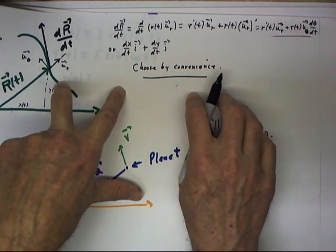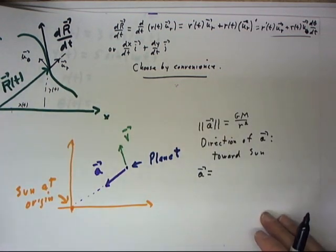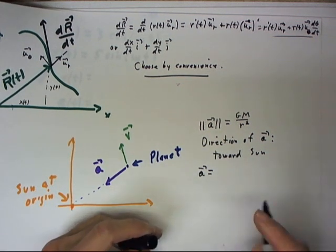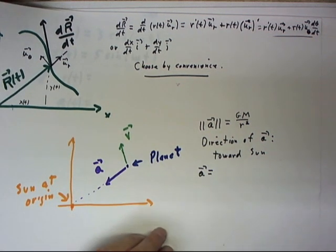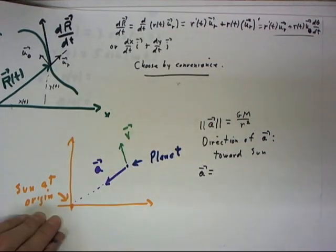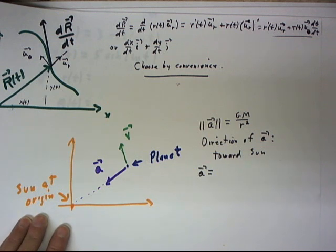Okay, so again, our choice is a choice of convenience. Now, we're going to illustrate a case where the convenient choice is going to be the polar representation, the representation in terms of u sub r and u sub theta.